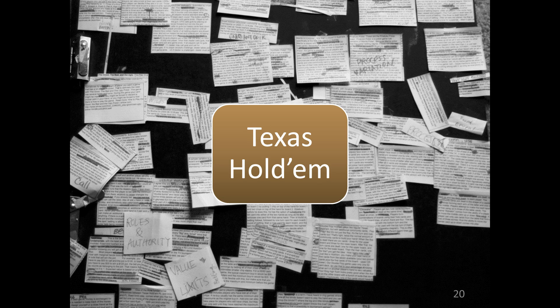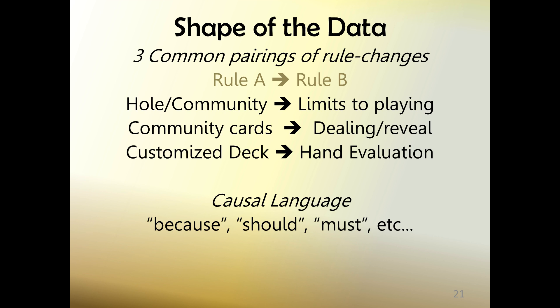Starting with the shape of the data in Texas Hold'em, by grouping variants according to how similar they were to each other, we found three common pairings of rules. Instead of giving you two hole cards, I'll give you three or four — but if I do that, I'll also add a second rule that forces you to play only a few of those cards. Or if I change the rules for community cards that provide a weird shape — a cross, an elevator — you'll find this rule is usually paired with another that says how you're supposed to deal or reveal them. If I change the makeup of the deck, as in Spanish poker where you play with only ace to ace, we add new rules to say which hand beats which. We found a lot of causal reasoning in the language of rule descriptions: because, should, must.